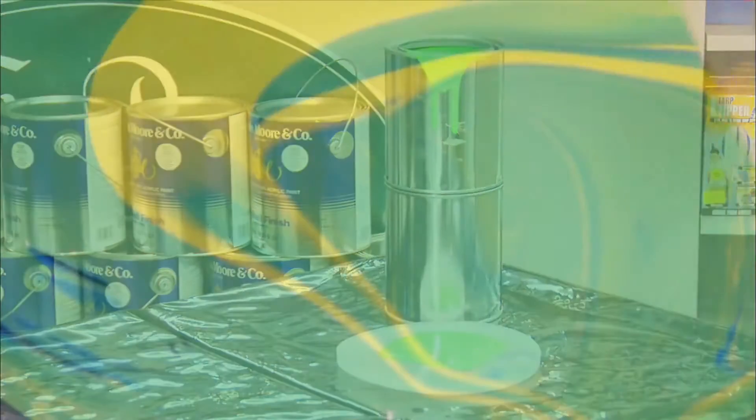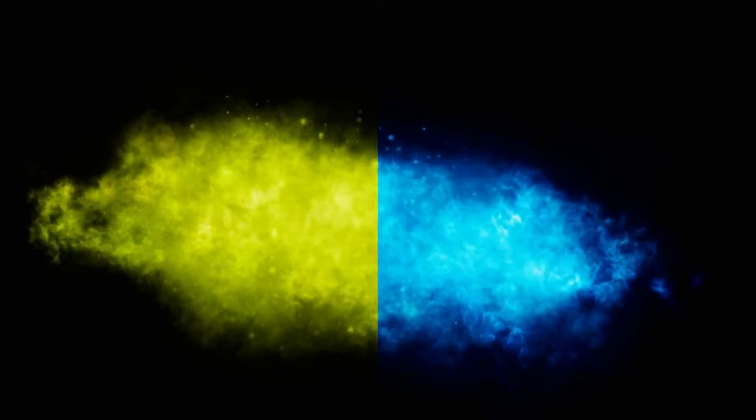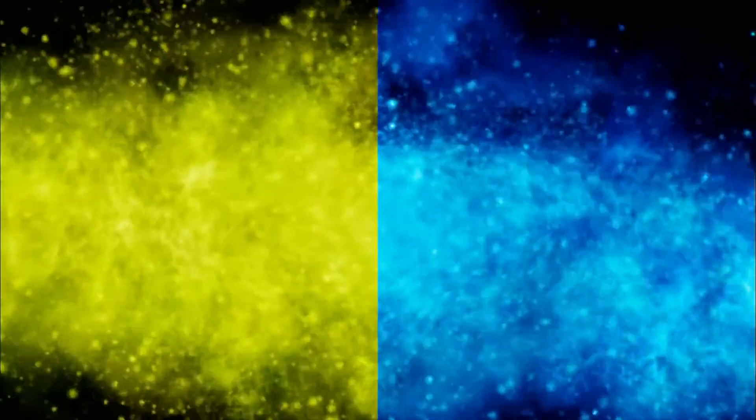The two colors of paint represent the different particles in the infant universe. To end up a uniform green, like the cosmic background radiation, they had to be touching. But when scientists first calculated the speed of the Big Bang, they concluded that it blew everything apart faster than the speed of light. Meaning blue and yellow were too far apart, even at the instant of creation, for any mixing to take place.